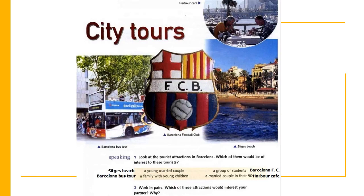The third picture is Barcelona Football Club. Barcelona Football Club may be visited by a group of students. And the last picture is the picture of Sitges Beach. Sitges Beach may be visited by a young married couple. So my question is, which one of these tourist attractions do you want to visit?